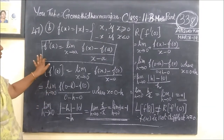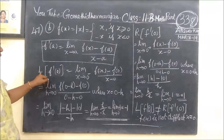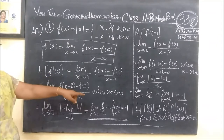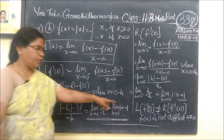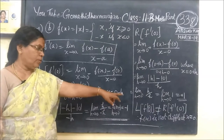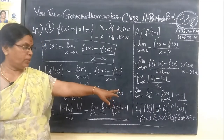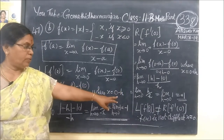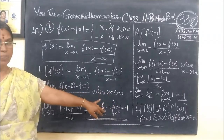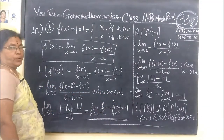To prove it is not differentiable, we show the left hand derivative of f at 0 is not equal to the right hand derivative of f at 0. This is the left hand side, this is the right hand side, and since the difference is not equal, we prove it is not differentiable.